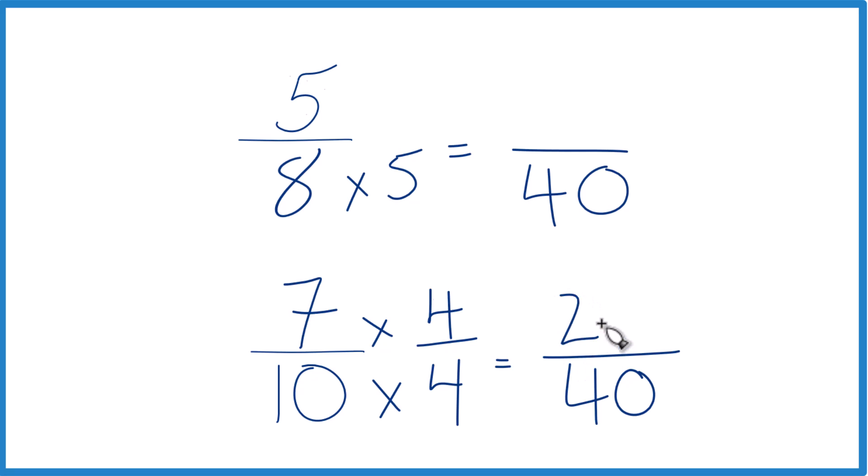7 times 4, that's 28, and then up here, 5 times 5, that equals 25.